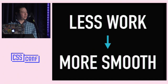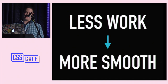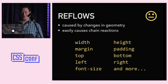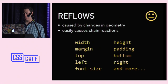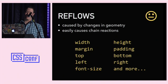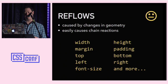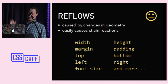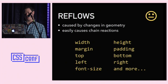I want to talk about three categories of CSS properties and the costs associated with animating them. The first category are properties that cause reflows. This happens whenever you animate something that changes geometry. Not only does your browser have to recalculate geometry for the element you're animating, but it could have a chain effect, forcing it to redo layout for all the elements below it in the render tree. Layout can be very expensive.